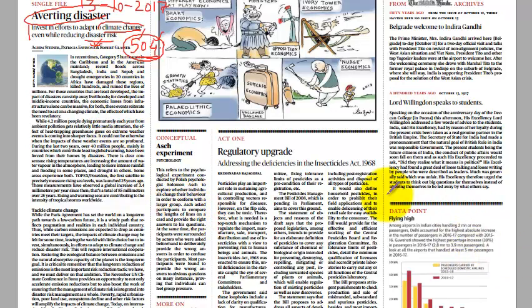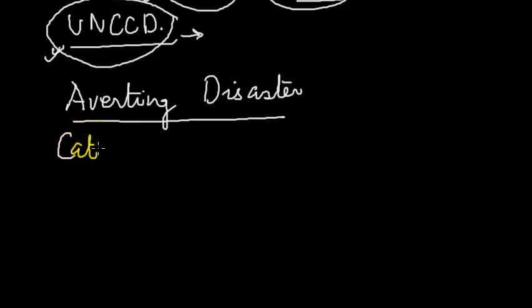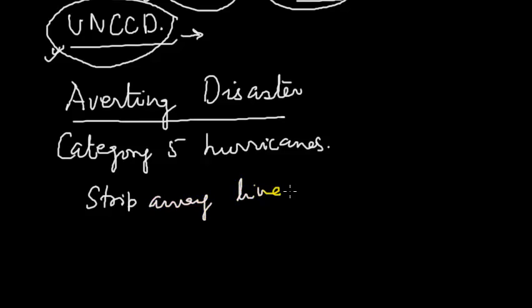This important article discusses recent Category 5 hurricanes in the Caribbean and American mainland, record floods across India, Nepal, and Bangladesh, and drought emergencies in 20 African countries. These disasters have damaged regions, killed hundreds, and ruined the lives of millions. For less developed countries, the impact of disasters can strip away livelihoods.